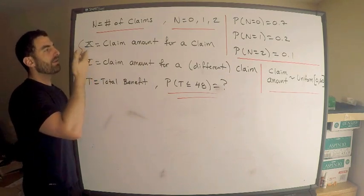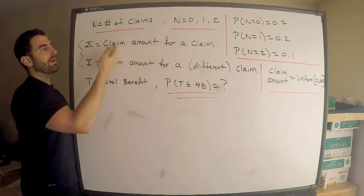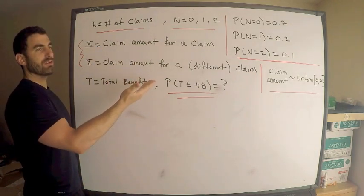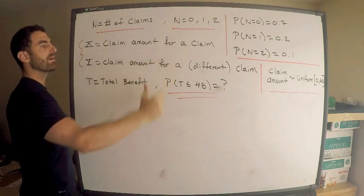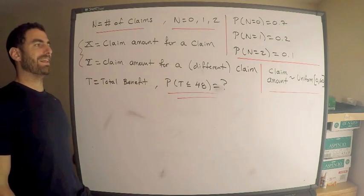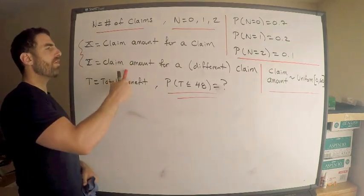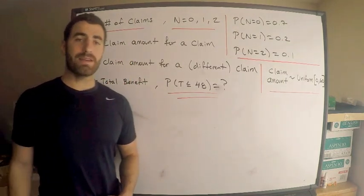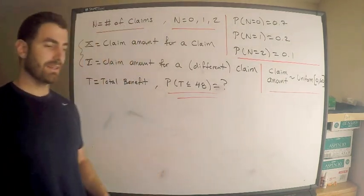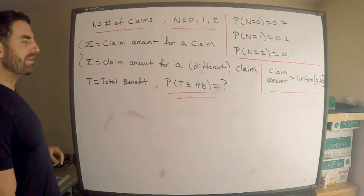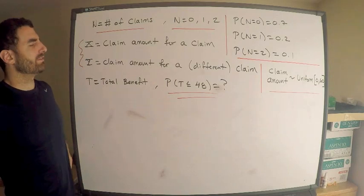If there's one claim, then we have a claim amount representing a random variable that represents the amount of that claim. If there's a different claim, in other words, if there are two claims, we have a different amount for that claim there. Each of these are independent actually, and identically distributed. Actually, they didn't even say that, but there is independence, right?